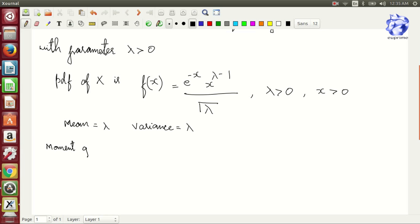The mean and variance are both equal to λ. We get the moment generating function M_X(t) as 1 minus t to the power minus λ, where the magnitude of t is less than 1.